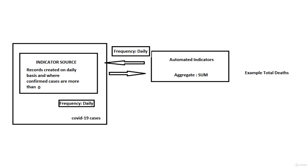So these are the things that we have to mention when you actually create your indicator source: which table, what is the frequency, what is the condition.